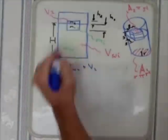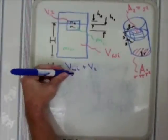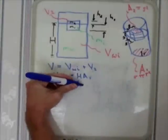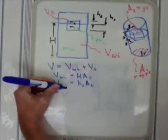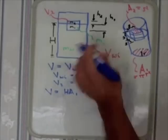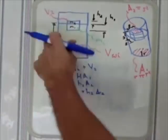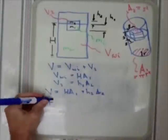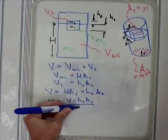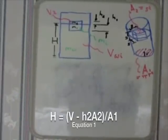The total volume equals VWI plus V2. VWI equals H times A1 and V2 equals H2 times A2 so we can rewrite that. Now rearranging that we have our first equation which will be H equals V minus H2A2 over A1.